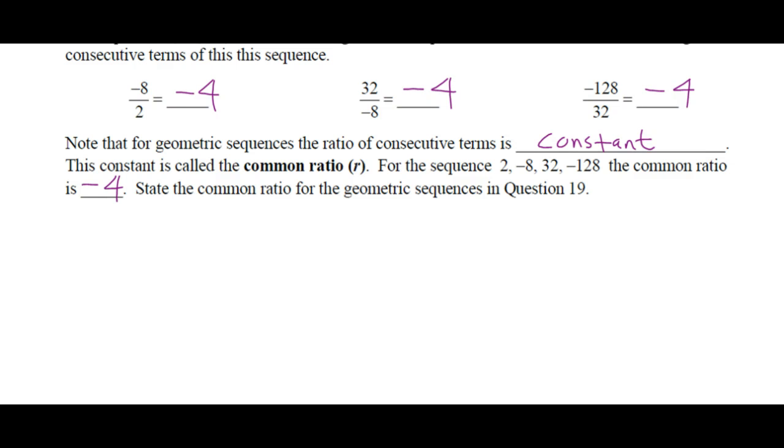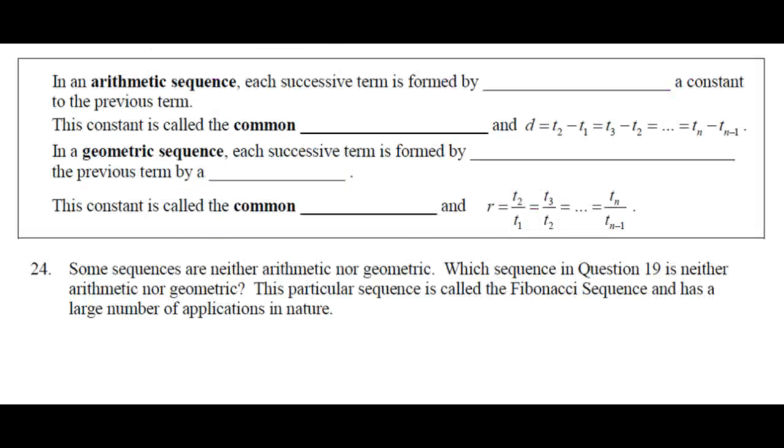State the common ratio for the geometric sequences. So for D, R equals 2. For E, R equals negative 3. And for F, 1 half. That's another reason why I didn't want to say divide by 2. Because what we want to do with this ratio is say we're always multiplying by it. So we will never say divide by 3. We'll just say multiply by 1 third.